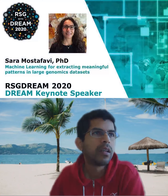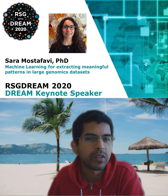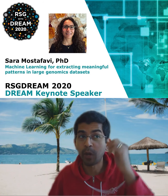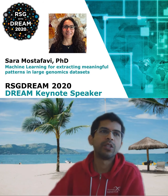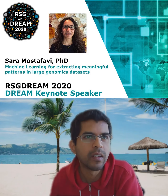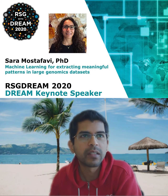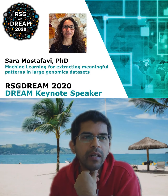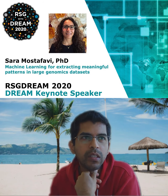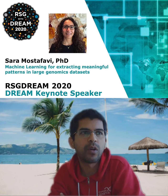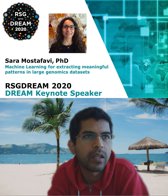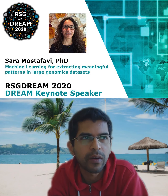I'd like to introduce our next keynote. It's my great pleasure to introduce Sarah Mustafavi, who is an associate professor in the Paul Allen School of Computer Science and Engineering at University of Washington. Before UW, she recently moved there. Before that, she was assistant professor in the Department of Statistics and Medical Genetics at UBC in Canada and a faculty member at the Vector Institute. Sarah is a recipient of several awards, including the Canadian Institute for Advanced Research CIFAR-AI Chair in 2018 and Canada Research Chair in Computational Biology. She obtained a PhD in CS from the University of Toronto in 2011 and performed postdoctoral work at Stanford with Daphne Koller.